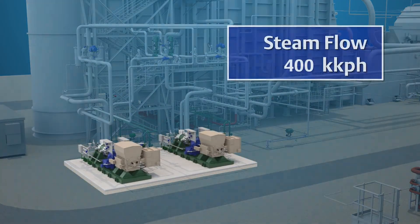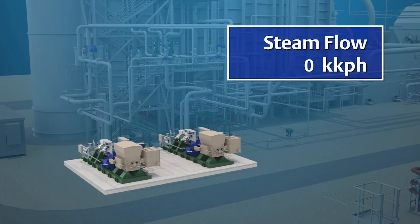At the same time, feedwater flow is reduced and ceases once steam production ends, maintaining drum level at its set point.